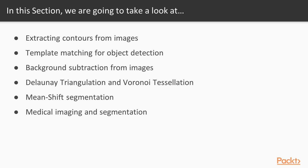In this section, we'll learn about various important image segmentation and object detection techniques. We'll see how we can extract contours from images and approximate their shape and compute their geometry. We'll learn a technique called template matching to find templates in an image, and we'll see how we can perform background subtraction on images to separate the background from the foreground. We'll also learn about Delaunay Triangulation and Voronoi Tessellation, which are very useful for finding the convex hull of any shape in real time.